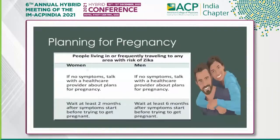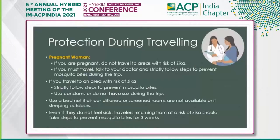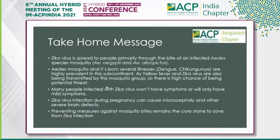If planning a pregnancy: women should wait at least two months after symptoms start before trying to conceive. Men should wait at least six months after symptoms start before trying to conceive, as the virus can persist in semen. Regarding travel protection: if you are pregnant, do not travel to areas with Zika virus. If you must travel, consult your doctor. If you travel to a Zika-risk area, strictly follow steps to prevent mosquito bites.